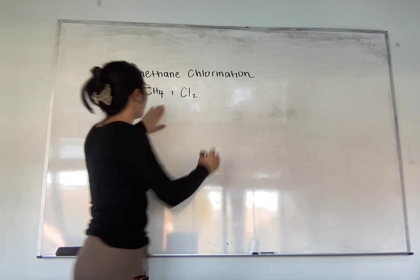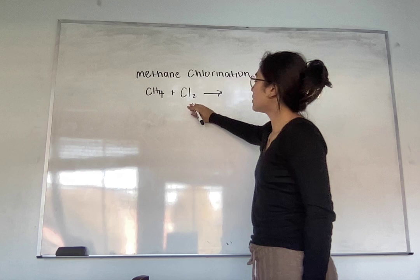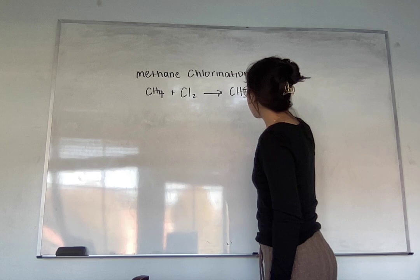Okay, anyway, so chlorination, this follows this, we have an alkane plus a halogen, it's always going to make an alkyl halide, which is going to be CH3Cl, and a nice little acid. Okay, so that's the general formula.